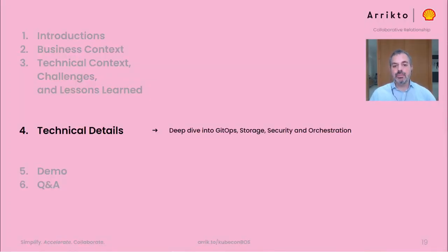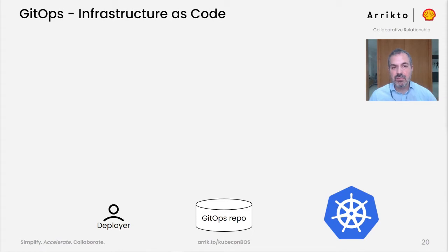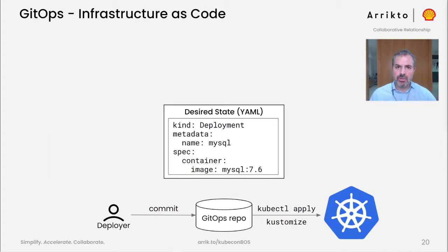Let's take a deeper dive into three of the points we just mentioned: GitOps-based deployments, storage, and orchestration of end-to-end workflows. What is GitOps? Here's a deployer on the left-hand side and a Kubernetes cluster where they want to deploy Kubeflow on the right-hand side. GitOps is all about a git repository sitting in the middle. The deployer commits their desired state of the cluster as YAML manifests and only applies committed manifests to their Kubernetes cluster using standard kubectl apply or even Kustomize.